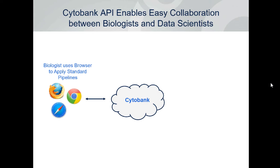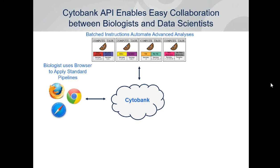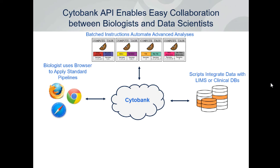Another tool that Cytobank has is an API. This is going to allow easy collaboration between biologists and data scientists and allow you to do an assortment of different things — for example, you could automate setting up different advanced analyses like viSNI or Citrus using the API.